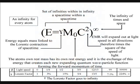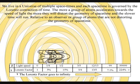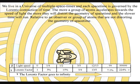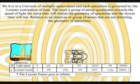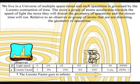We therefore live in a universe of multiple space-times, and each space-time is governed by the Lorentz contraction of time. The more a group of atoms accelerates towards the speed of light, the more they will distort the geometry of space-time, and the slower time will run, relative to an observer or group of atoms that are not accelerating.